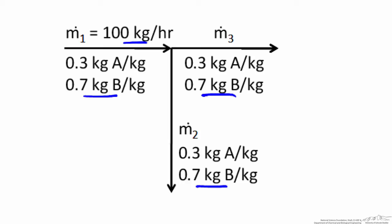But we don't know how we're distributing the 100 kg per hour amongst these two streams. So we have two unknown flow rates leaving the splitting point.